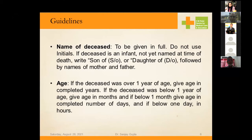The age of the person must be mentioned in completed years for adults. If the deceased was below one year of age, the age should be given in completed months. If below one month, mention the completed number of days. If the infant was below one day old, mention the age in hours. This is very important — sometimes certificates are vaguely completed or the age is not mentioned at all. We must follow these prescribed guidelines.